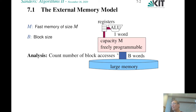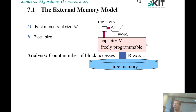We have to be very careful with the number of block accesses, also called IOs. In algorithm theory, external memory algorithms usually just count the number of block accesses. In algorithm engineering, we additionally analyze the internal running time because that is also often a bottleneck.